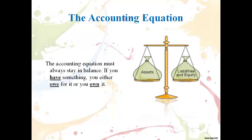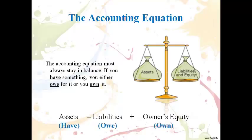The accounting equation must always stay in balance. If you have something, you either owe for it or you own it. Assets must always equal liabilities plus owner's equity.